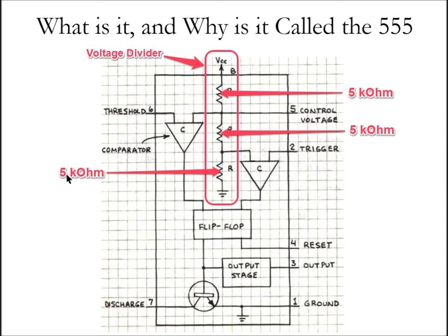And here's an interesting point: 5k ohm, 5k ohm, 5k ohm. Can you see why it's called the 555 timer chip? Because the three resistors in the voltage divider circuit inside are all 5k ohm resistors.